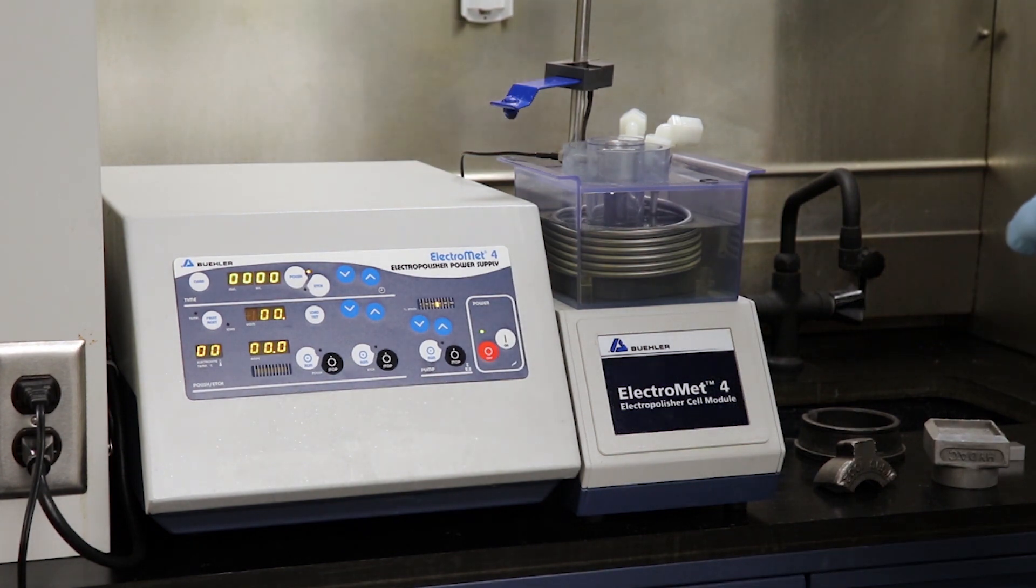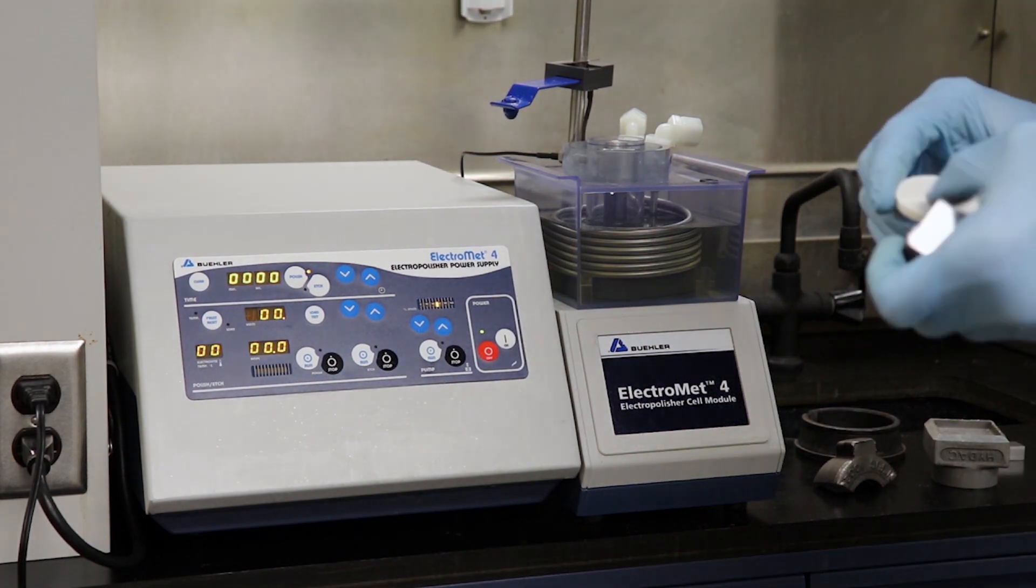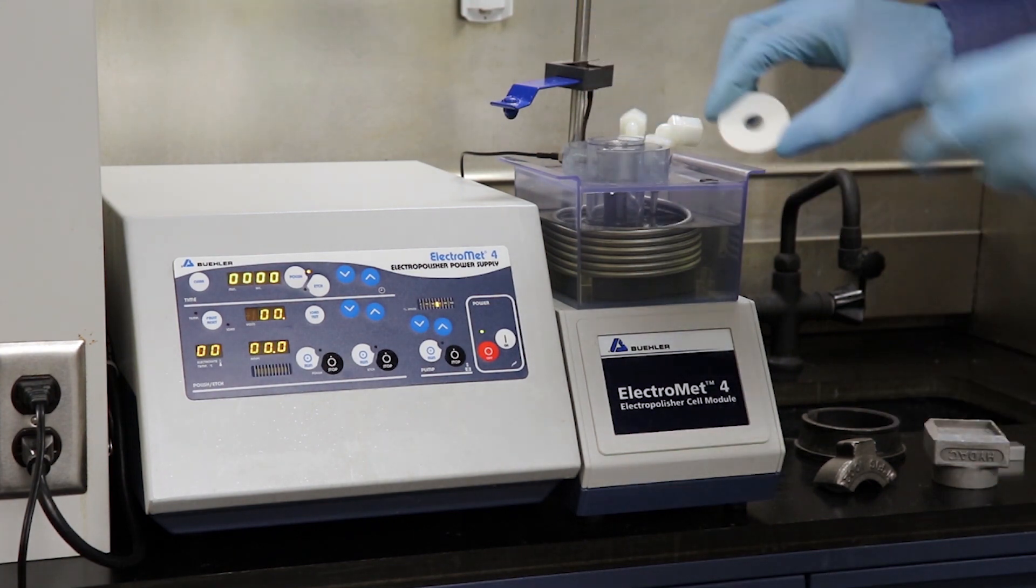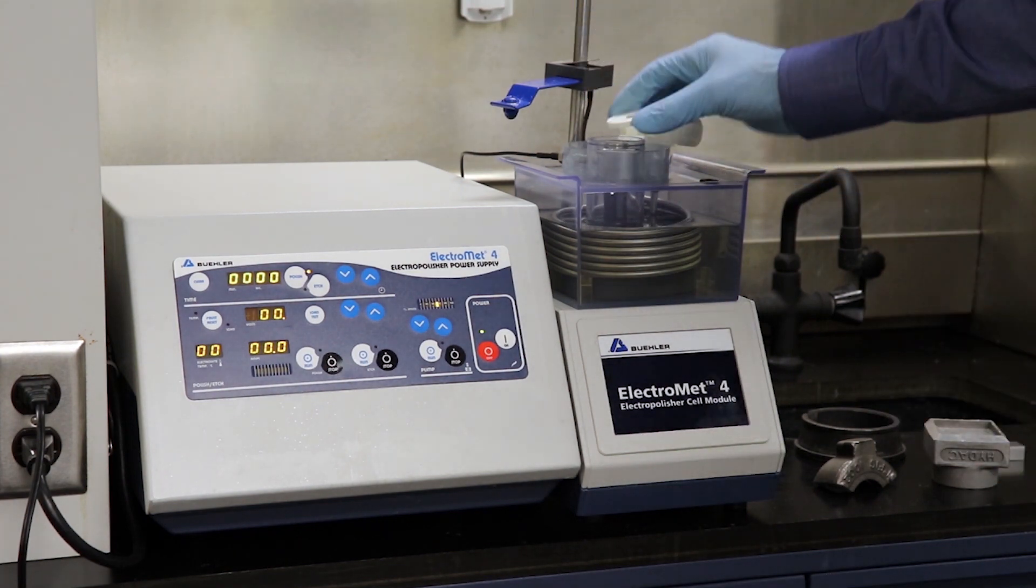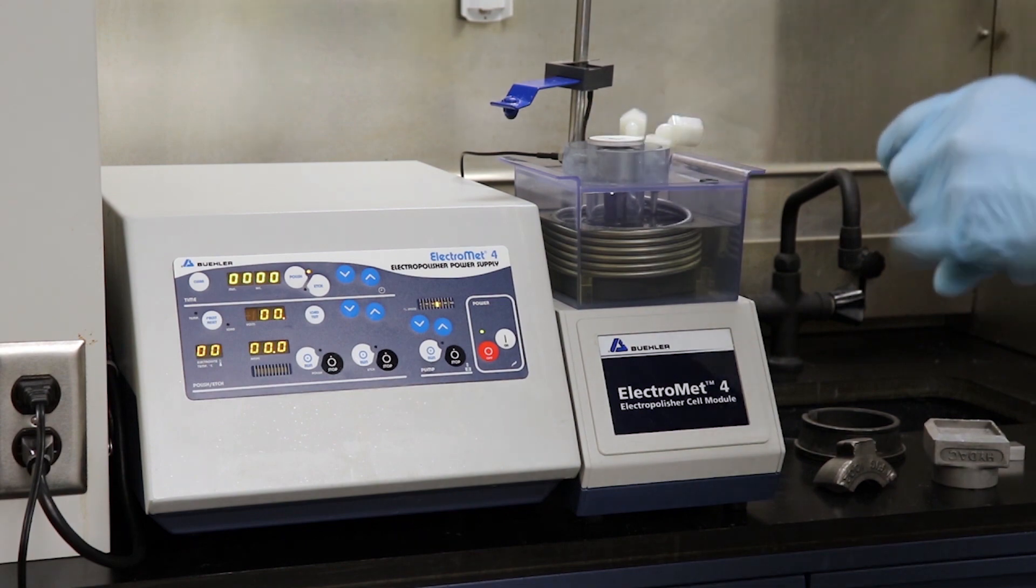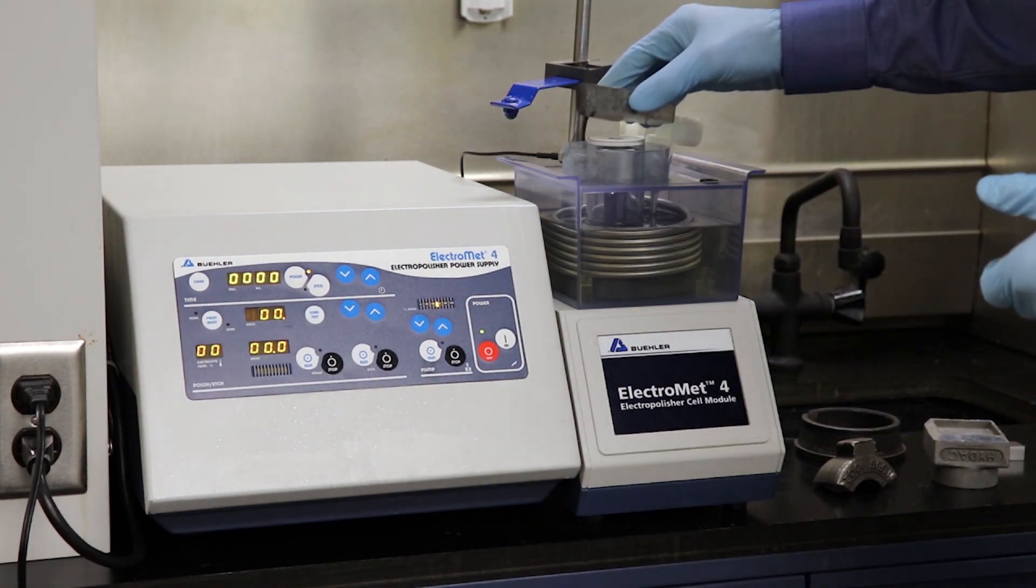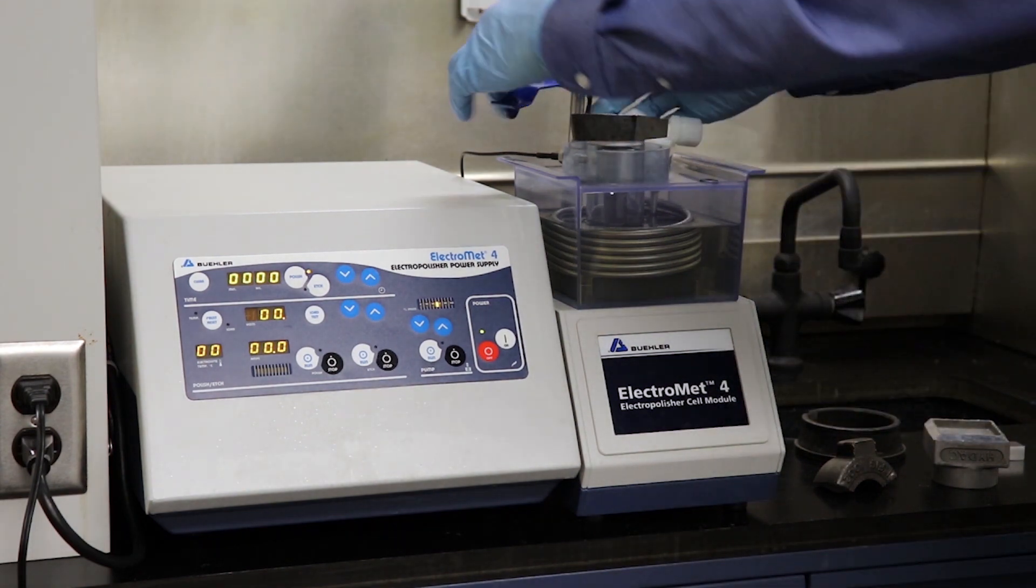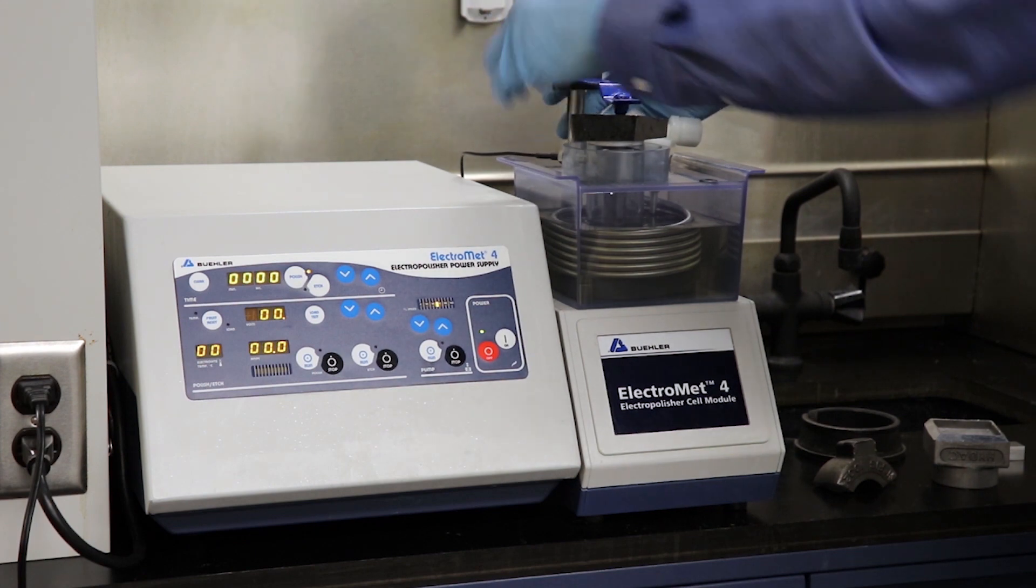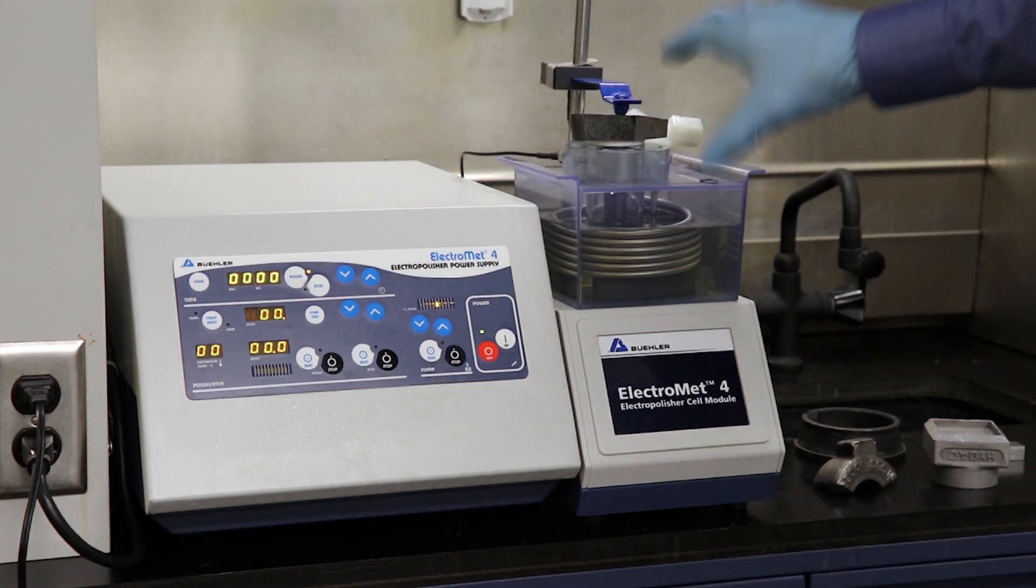I've got a mask. I'm going to insert on top of the cathode, it's 12 millimeter orifice. This is going to be our area that we've selected to polish. I'm going to put the sample on the mask and I'm going to lower the anode onto the back of the sample surface to make the electrical connection.